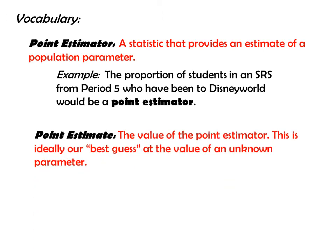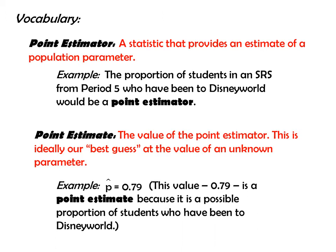A point estimate is the value of the point estimator. This is ideally our best guess at the value of an unknown parameter. An example would be p-hat equals 0.79. That is a point estimate because it is a possible proportion of students who have been to Disney World. So point estimator is what we are measuring; the point estimate is the actual value of that measurement.